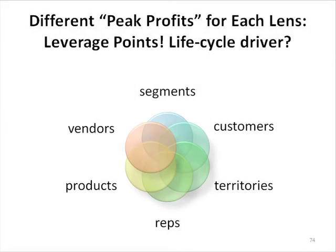Hi. In this slide, we're going to clarify something. A lot of people say, wait a minute, you're looking at these different whale curves, and I only have one financial operating profit number — it's $200,000 for the year — so I don't get this internal peak profit number and why it varies.